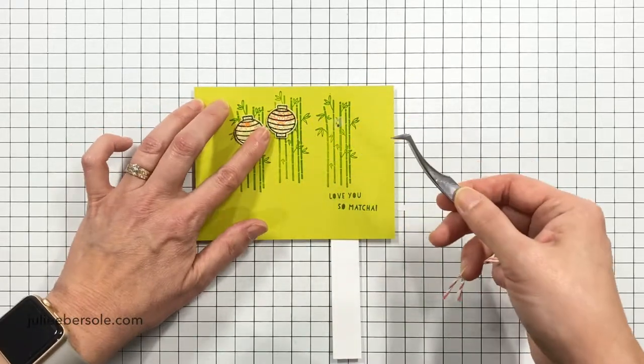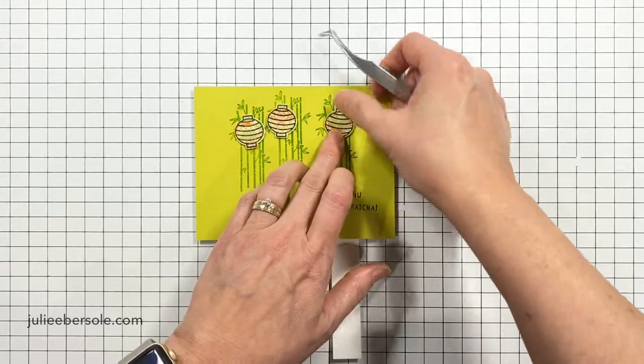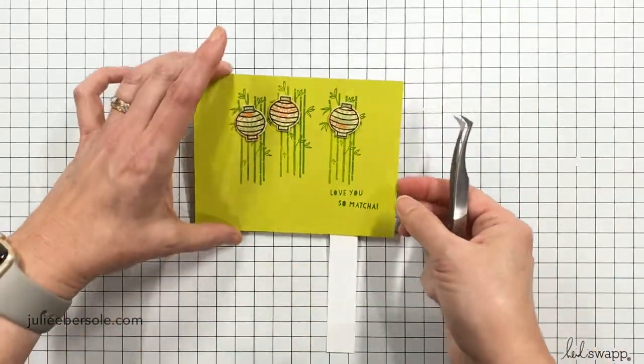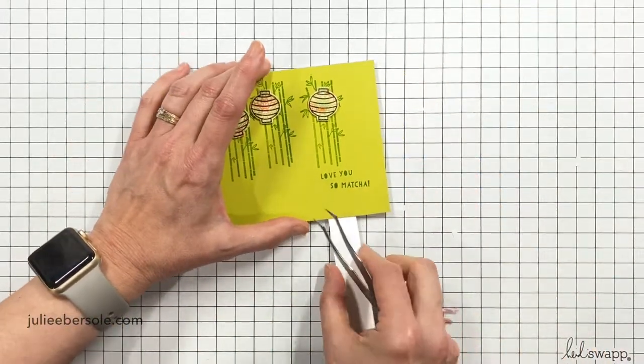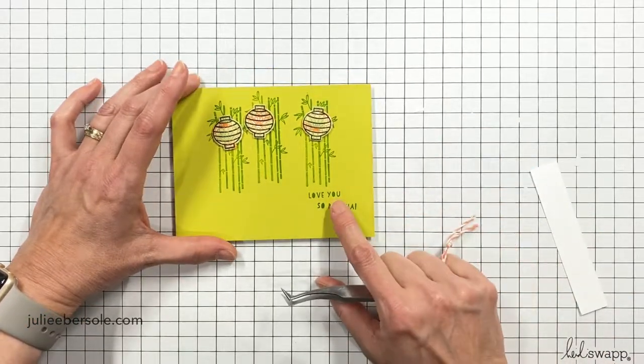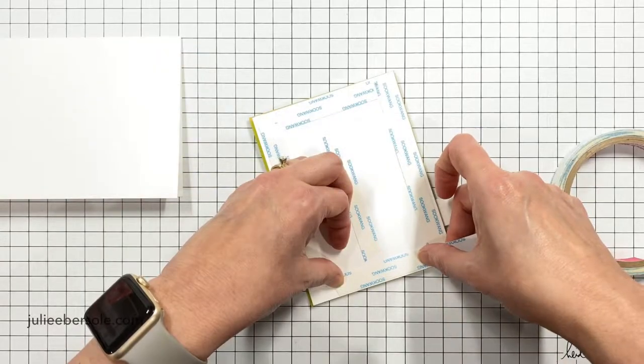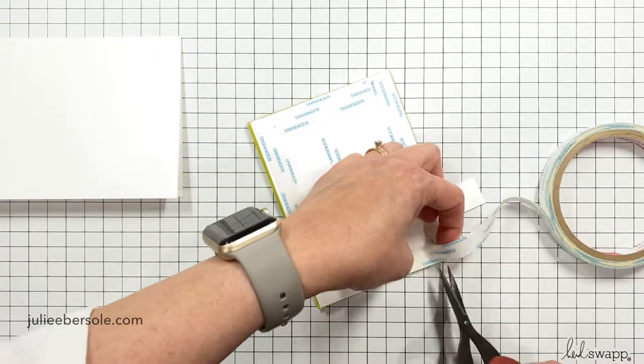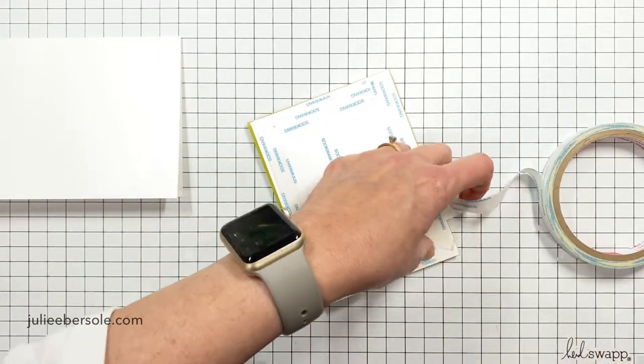I did put some little bits of foam tape on the top and the bottom of each lantern. And then I'm going to layer those right there onto the card front. And there I'm just pressing on the word matcha and it's lighting up the little lanterns. It's so much fun. Okay, let's get back to business now.